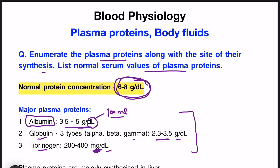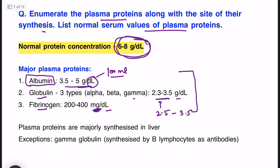Easy values to remember: albumin is 3.5 to 5, globulin you can round it out to 2.5 to 3.5, and fibrinogen no need to remember the concentration. Normal plasma protein concentration is 6 to 8 gram per deciliter. Regarding synthesis — if not specifically stated, the rule of thumb is that plasma proteins are synthesized in the liver. All plasma proteins are synthesized in the liver except some exceptions.